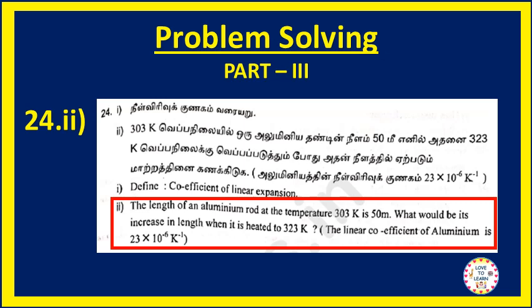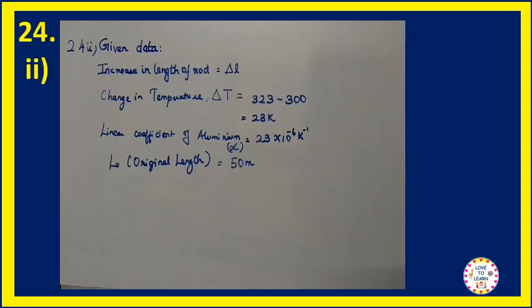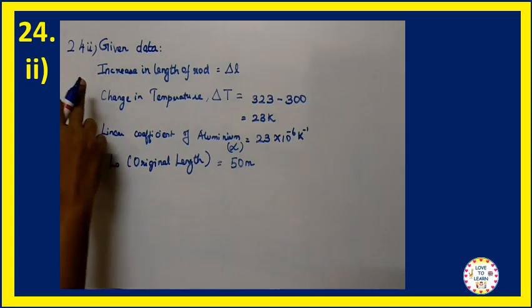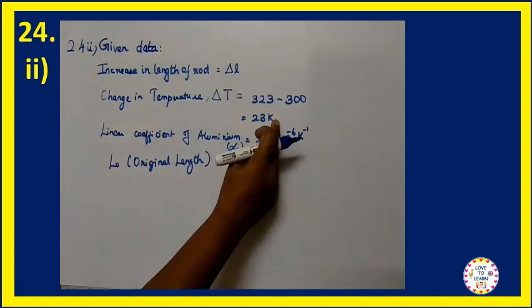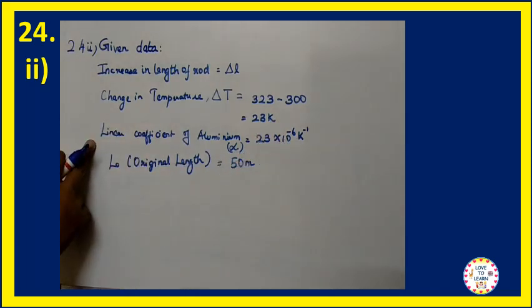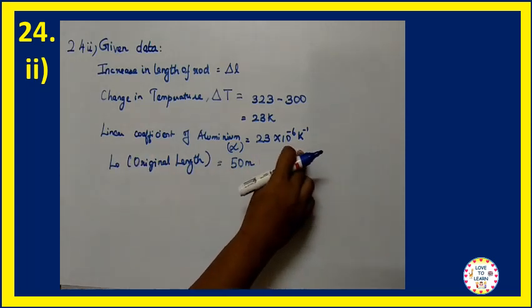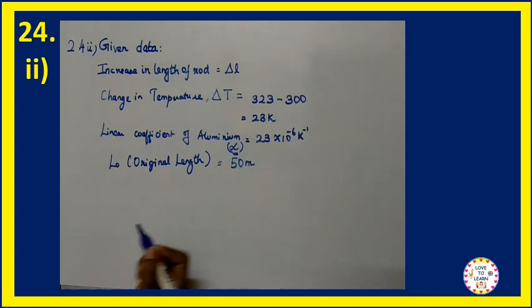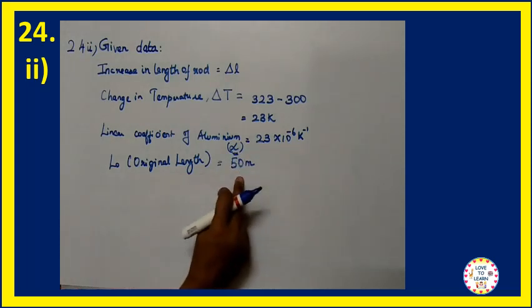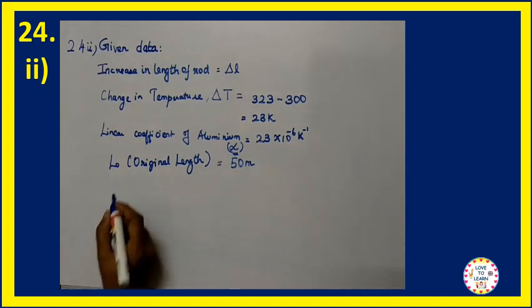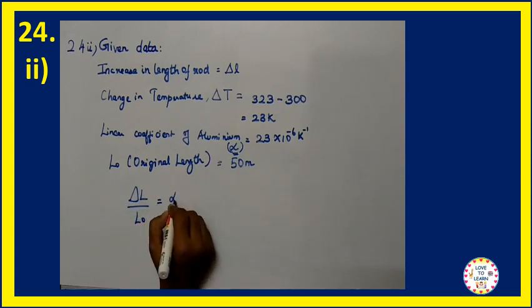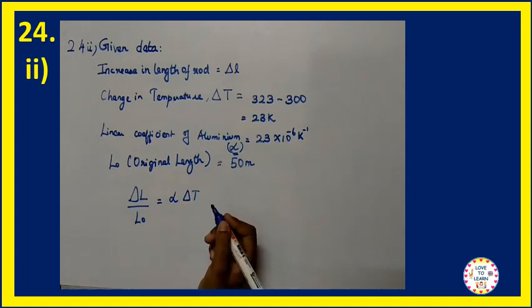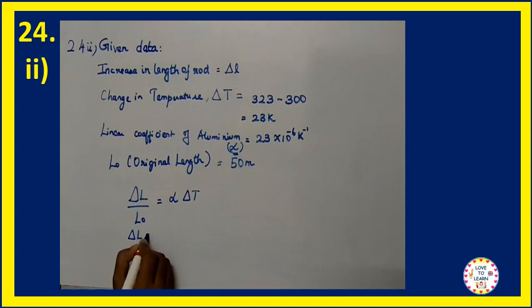Now let's get on to the solution. Let's take the given data. Increase in length of the rod is del L. Change in temperature del T equals 323 minus 303, which is 20 K. Linear coefficient of aluminum, which is 23 times 10 power minus 6, we have given as alpha. The original length of the rod is 50 meter. Now let's write the formula: del L by L0 equals alpha del T. So del L equals L0 into alpha into del T.